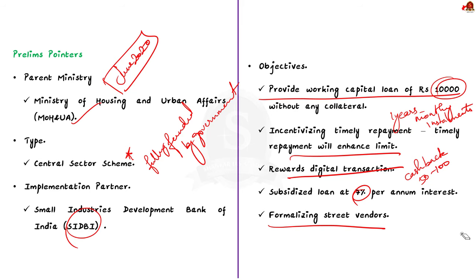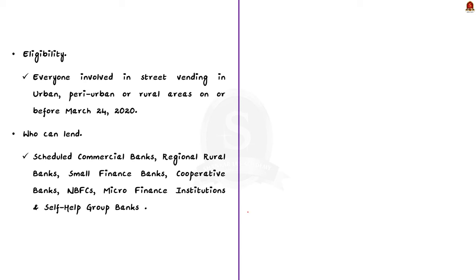The scheme is available to all street vendors engaged in vending in urban areas as on or before 24th March 2020. Street vendors in peri-urban or rural surrounding areas are also eligible. Lenders include scheduled commercial banks, regional rural banks, small finance banks, cooperative banks, NBFCs, micro-finance institutions, and self-help group banks established in some states or union territories.